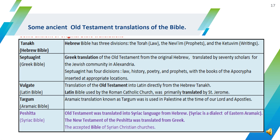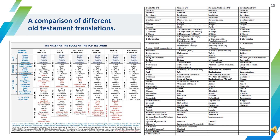It is good to have an understanding of a few early Bible translations. The Septuagint, or Greek Bible, is a translation of the Old Testament from the original Hebrew, translated by 70 scholars for the Jewish community in Alexandria. The Vulgate, or Latin Bible, is a translation of the Old Testament into Latin directly from the Hebrew and is used by the Roman Catholic Church. The Targum, or Aramaic Bible, was used in Palestine at the time of our Lord and the Apostles. The Peshitta is the Syriac Bible, a dialect of Eastern Aramaic; its Old Testament was translated from Hebrew and the New Testament from Greek, and it is the recommended Bible of Syrian Christian churches. Have a look at the table showing how the organization of books of the Old Testament is done in various translations.